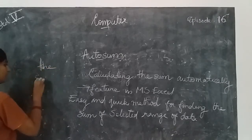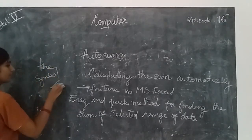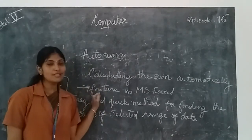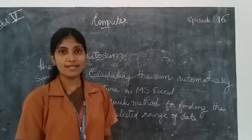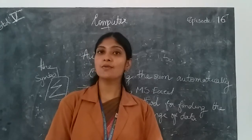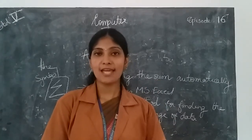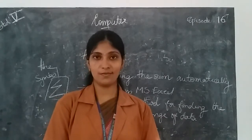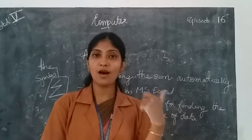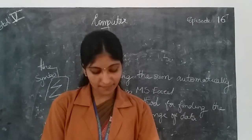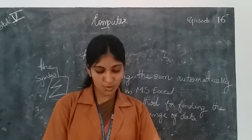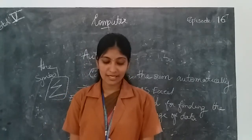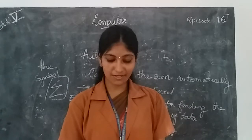The symbol of auto sum is sigma (Σ). This feature helps to find the sum very quickly. If you enter some values in the range of cells, just select them and press auto sum — you will find the sum of all the values entered in the cells. Now, let's do an example. Here is a table of cricket scores of a batsman across two countries. The question is: use auto sum to find the sum of the scores of a batsman. There are two columns — Matches and Scores.